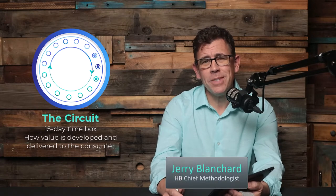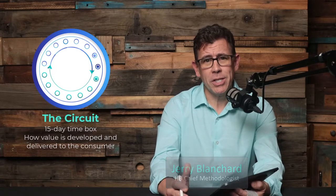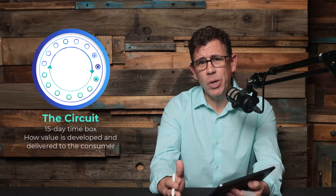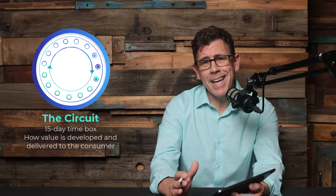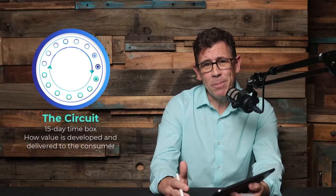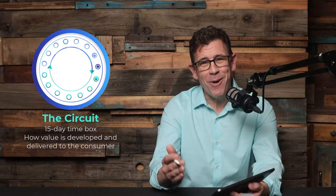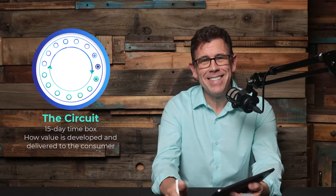Let's set some context. A circuit within the Hummingbird delivery ecosystem is kind of like a sprint or an iteration — it's a three-week or 15-day time box in which crews work on designing, developing, and delivering nectar, what we call value to the consumer.